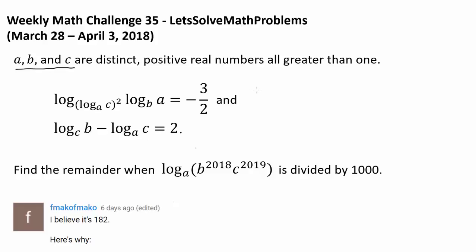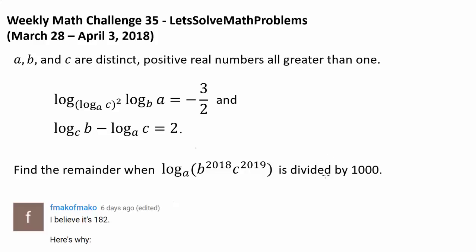We have 3 variables but only 2 equations, so we cannot calculate a, b, and c precisely. We wish to find the remainder when log base a of (b^2018 · c^2019) is divided by 1000. Even if we cannot find exact values of a, b, and c, maybe we can find relationships between them that will allow us to evaluate this.